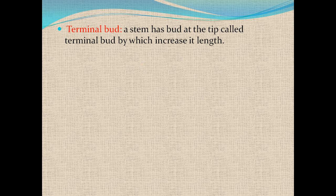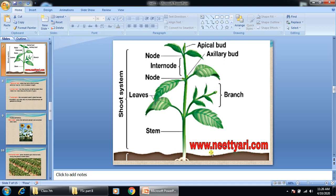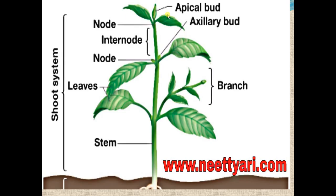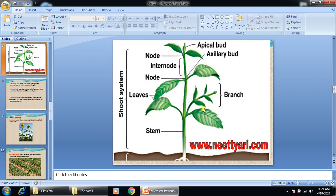Terminal bud — a stem has a bud at the tip called the terminal bud, which increases the length. It is also called the apical bud. You can see this in the diagram. Another bud is called the axillary bud, which is present between the leaf node and the stem. From this axillary bud, flowers and branches arise. You can see this branch arising from the axillary bud.